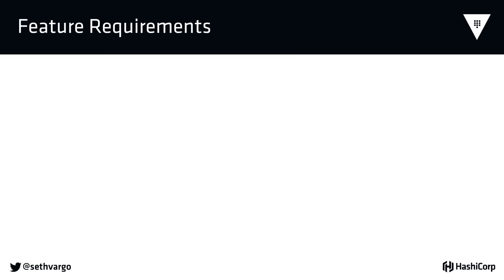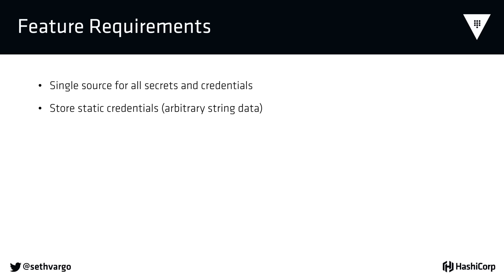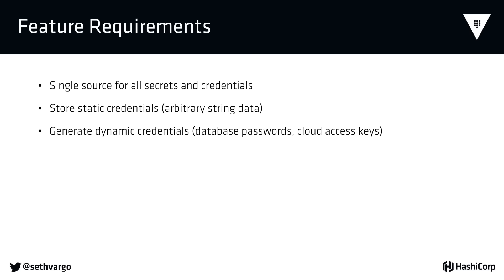If you're a larger enterprise or a more security-conscious organization, you probably have database administrators—you file a ticket, a DBA creates the user, and you put the password in a text file. It's very rare for us to generate per-application credentials, and those credentials are likely shared across all instances. In order to accomplish these and many more goals, we needed to take a revolutionary approach to secrets management. Vault is designed to be a single source for all secrets and credentials—both a static secret store, like an encrypted Redis or Memcached, where data is encrypted in transit and at rest, and a dynamic secret acquisition engine.